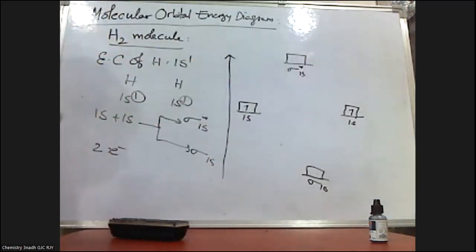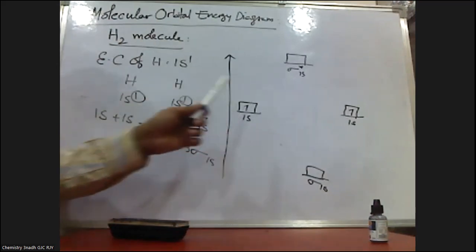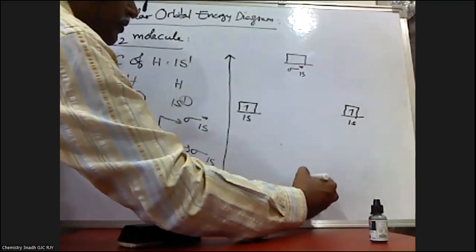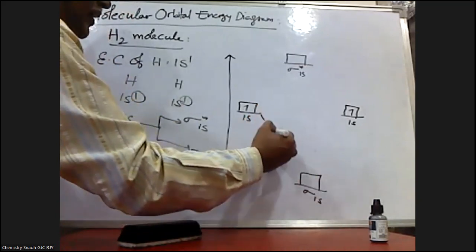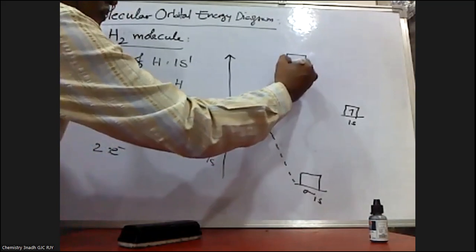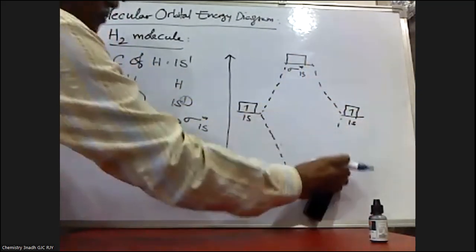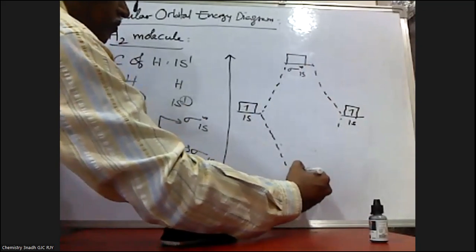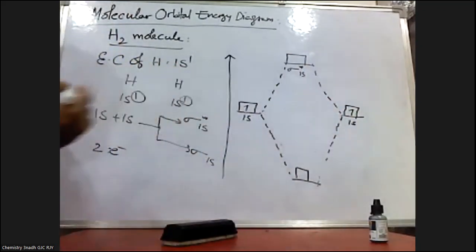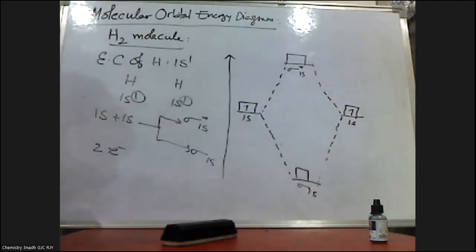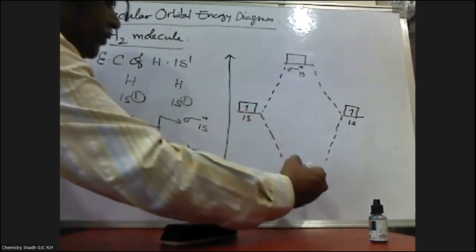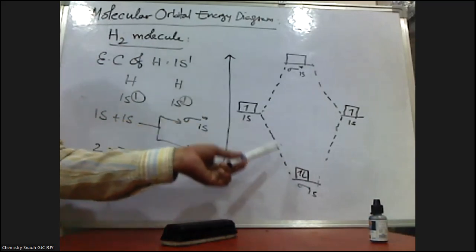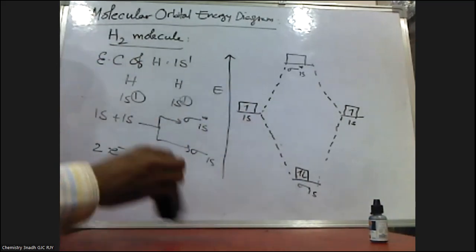While drawing the diagram, these two molecular orbitals should be on a single line and equidistant from the two atomic orbitals. This is the sigma 1s — now connect the lines like this. Now, how many electrons do we need to fill? Two electrons. Lower energy orbitals are filled first, then higher energy orbitals, according to the Aufbau principle. This is the molecular orbital energy diagram for the H₂ molecule.